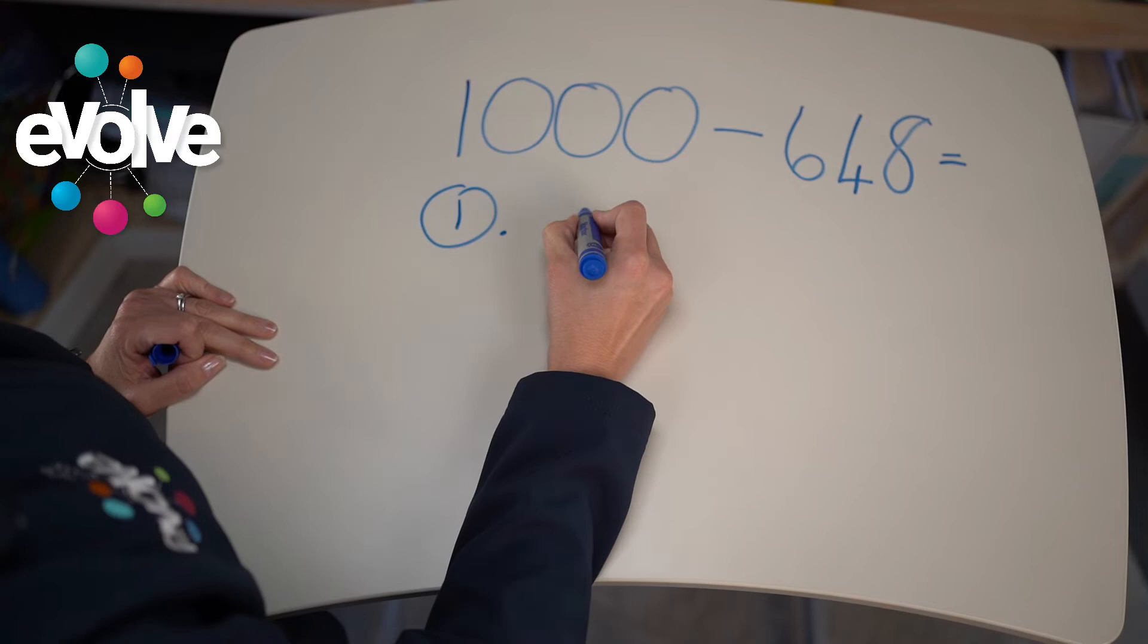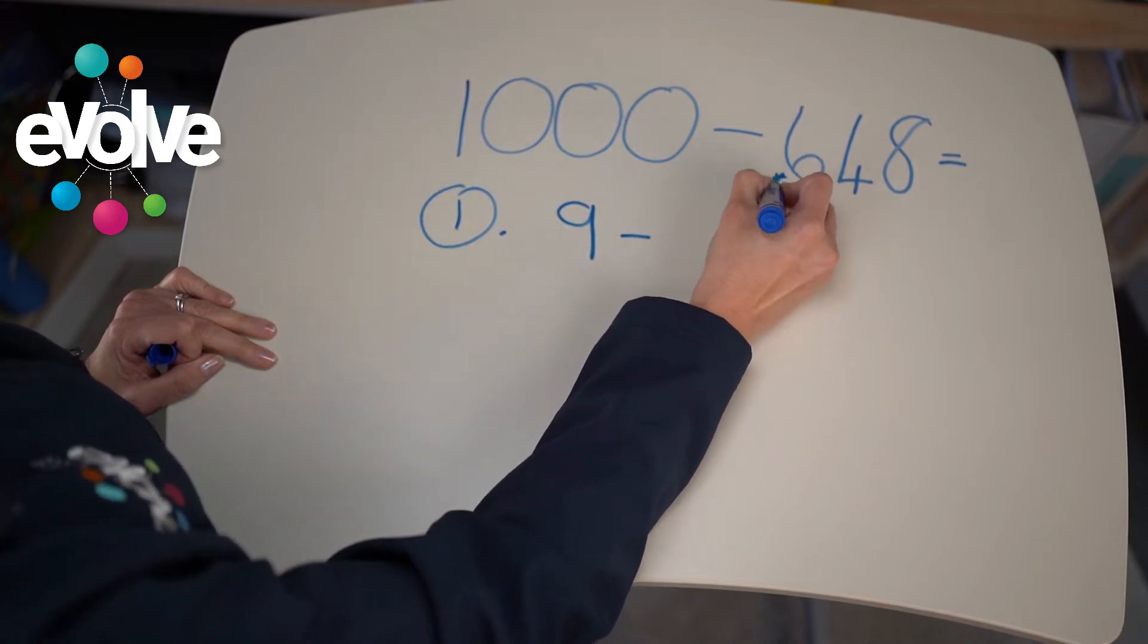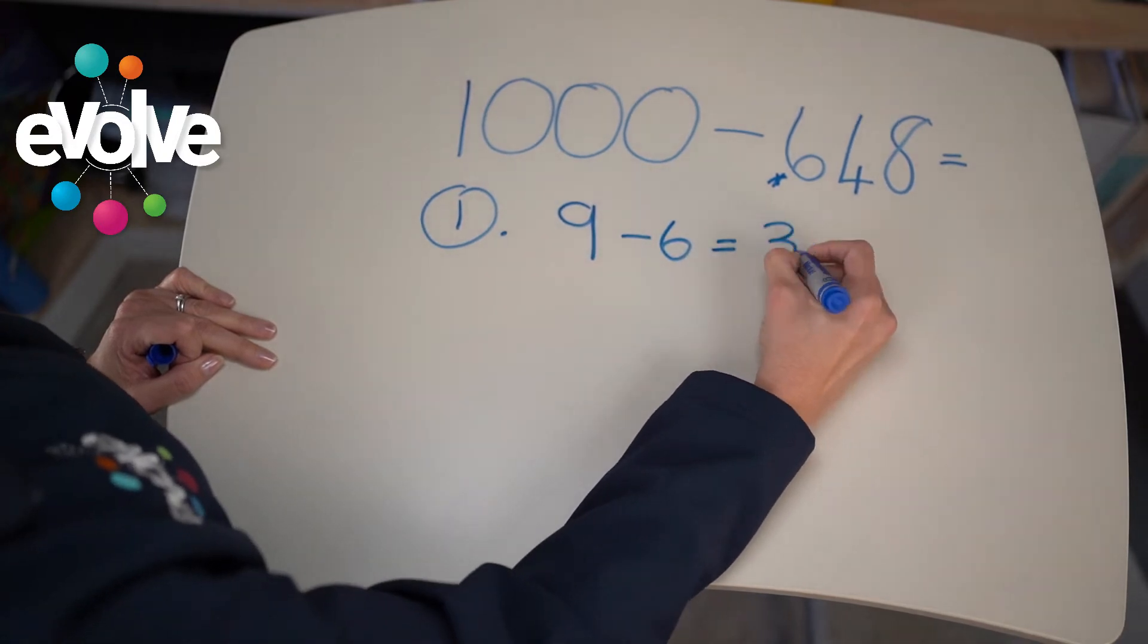So step one, we're going to take 9 and you're going to subtract the first number. So 9 minus 6 will give you 3.